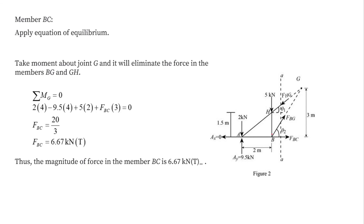For member BC, taking the moment about point G equal to zero: 2×4 minus 9.5×4 plus 5×2 plus the force FBC multiplied by 3 equals zero. Solving, the value of force FBC comes out to be 6.67 kN, and it is positive, so it is a tension force.